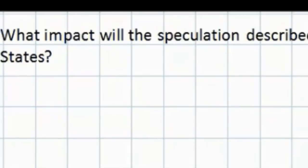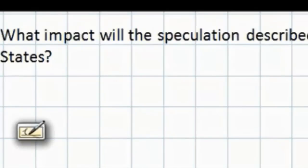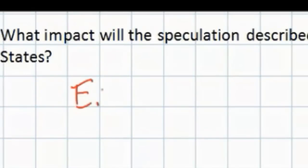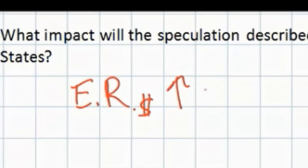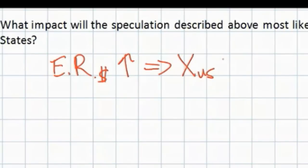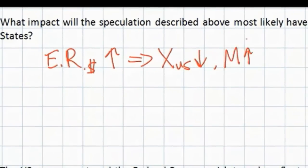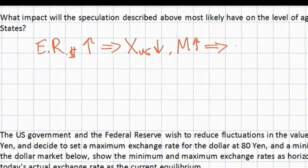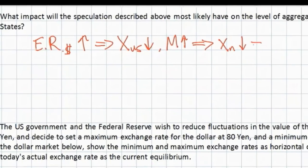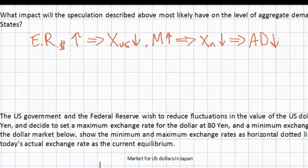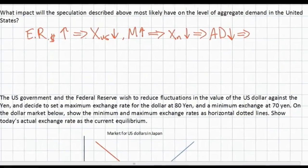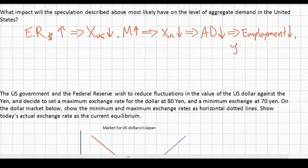The next question asks us to consider the likely impact that speculation on the appreciation of the US dollar will have on aggregate demand in the United States. If the exchange rate of the US dollar increases due to speculation, this will make US exports more expensive abroad, leading to a decrease in demand for US exports. At the same time, the stronger dollar will make imports more attractive to US households, so imports will increase. The decrease in exports and increase in imports causes net exports to fall, which causes aggregate demand to fall in the United States, leading to a fall in employment, a fall in national income, and possibly deflation.